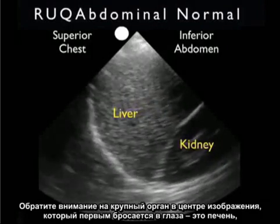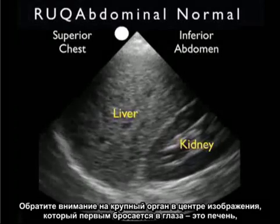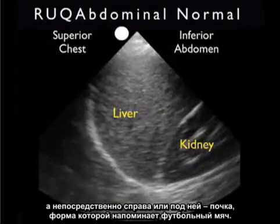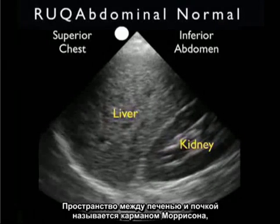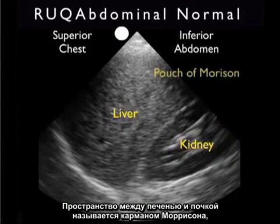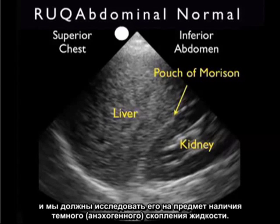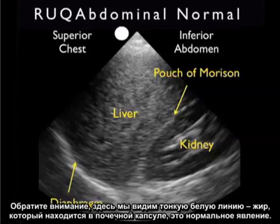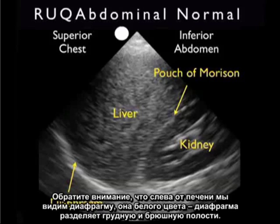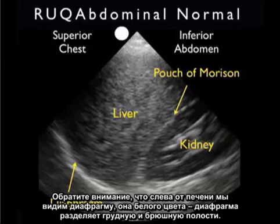Notice the first large structure that comes into view in the middle of the image is the liver, and to the right, or inferior to the liver, we see the football-shaped kidney. Now it's that interface between the liver and kidney that represents a potential space known as Morrison's pouch, where we'll be looking for dark, anechoic fluid collections. Note here, we see a thin white line making up a normal exam and representing the fat within the capsule around the kidney.